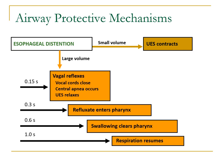The adjacency of the airway to the GI tract puts children at increased risk of complications related to gastroesophageal reflux. There are multiple protective mechanisms to protect our airways from the reflux content.